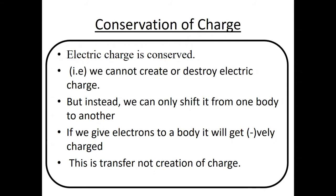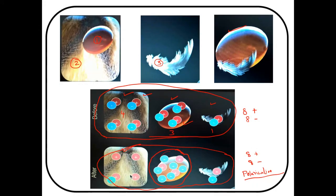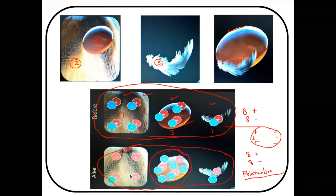In polarization, the negative charges go to one side and the positive charges to the other. When you bring the negatively charged amber crystal near the feather, positive charges in the feather come and settle on the near side. So the feather gets attracted and attaches to the amber crystal — this is the same as the balloon-on-wall concept.